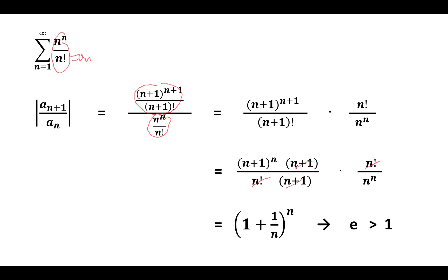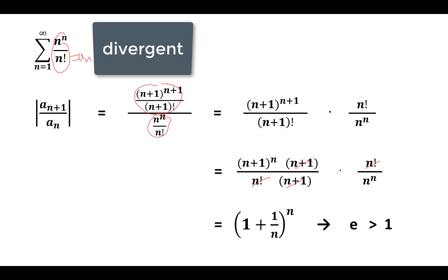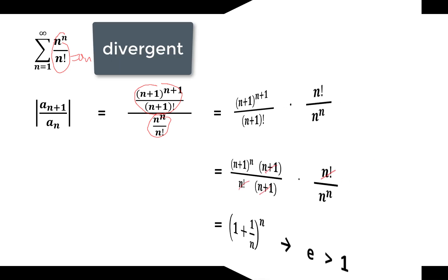We can cancel the n factorials and the (n+1)'s. That gives us (n+1)^n divided by n^n, which is the same as (1 + 1/n)^n. The limit of this quantity when n goes to infinity is equal to e — the constant, approximately 2.7. So it's bigger than 1, which means this series is divergent.